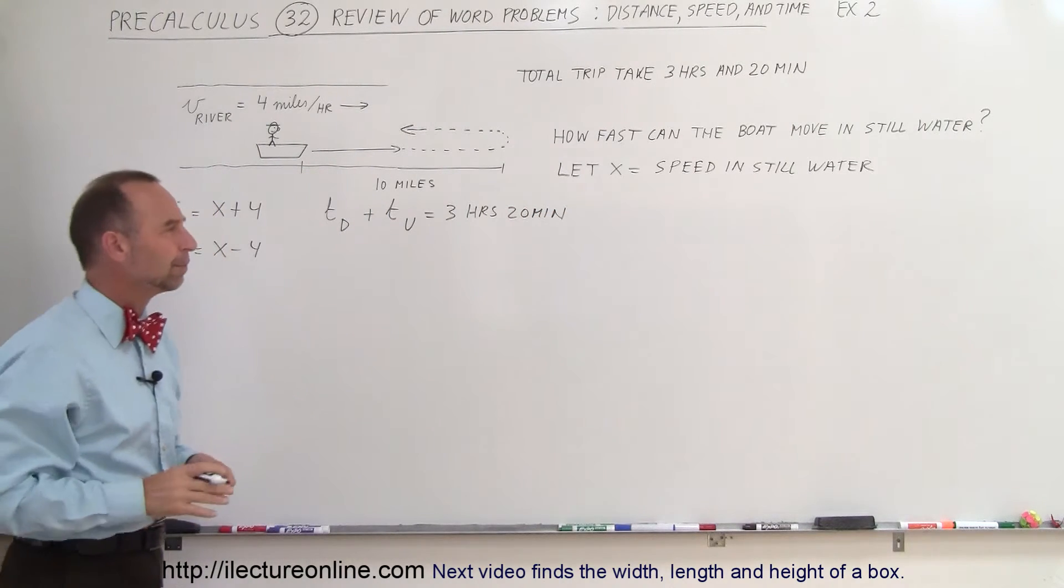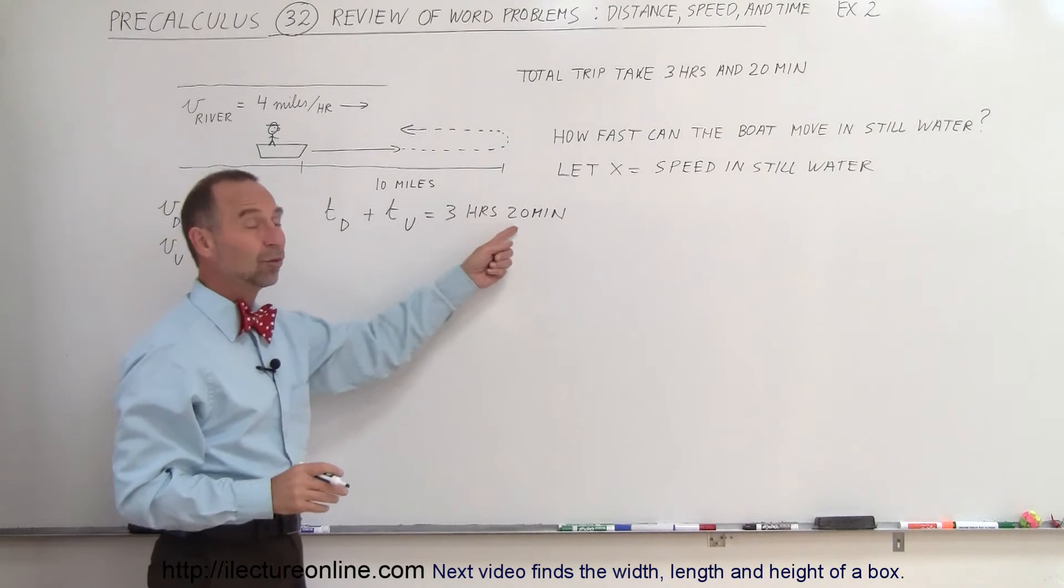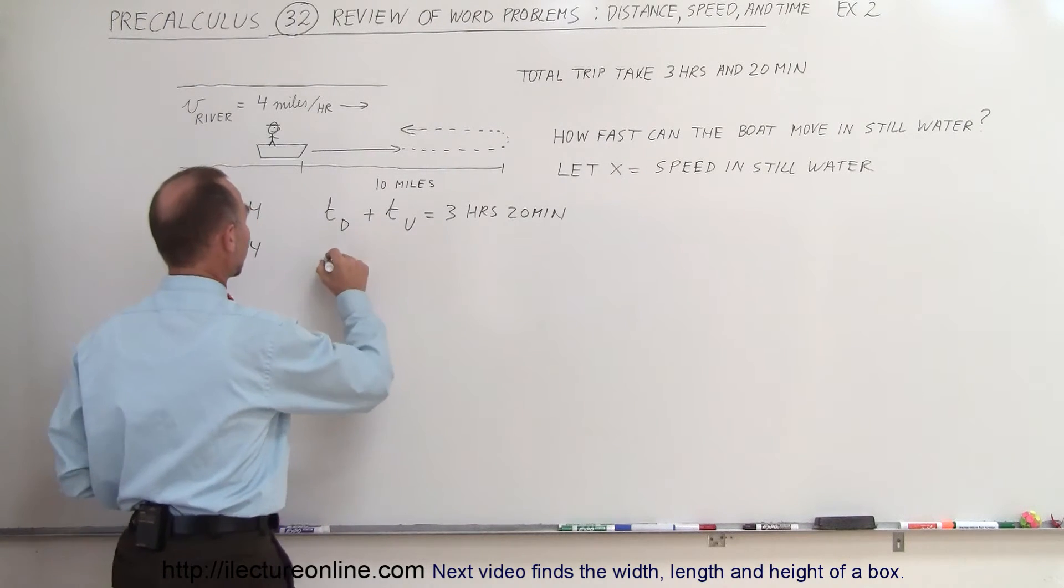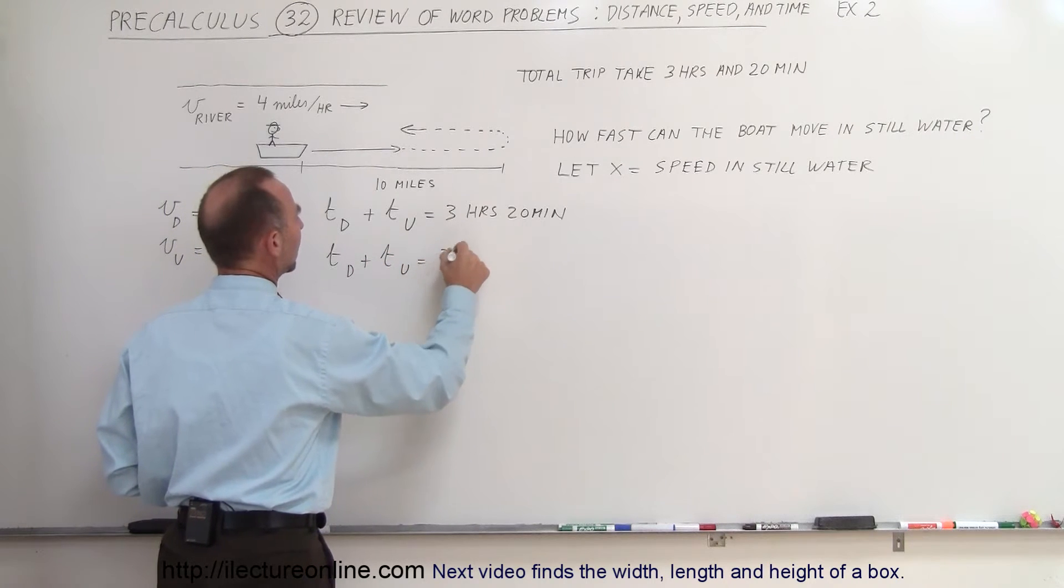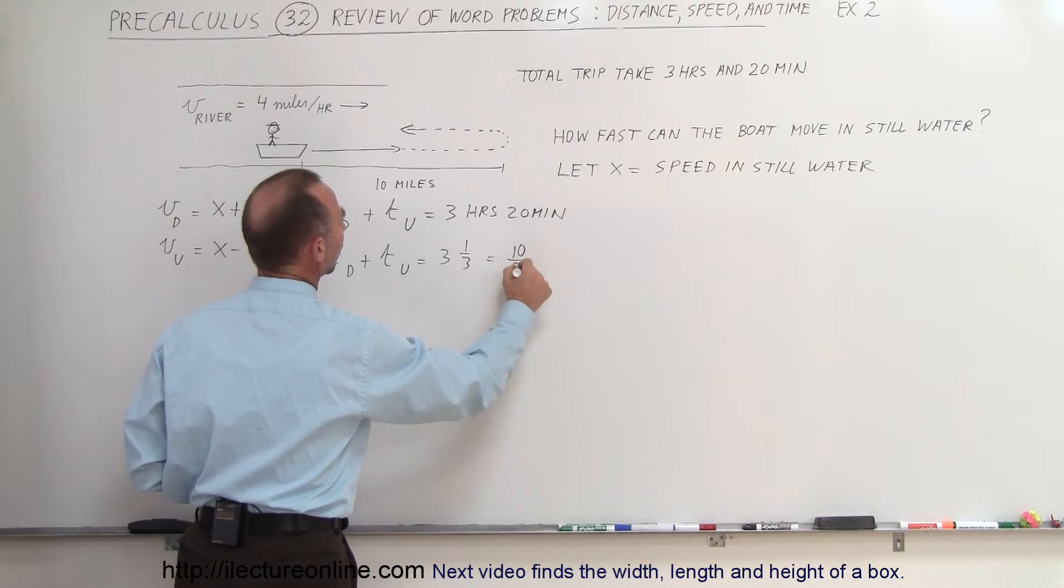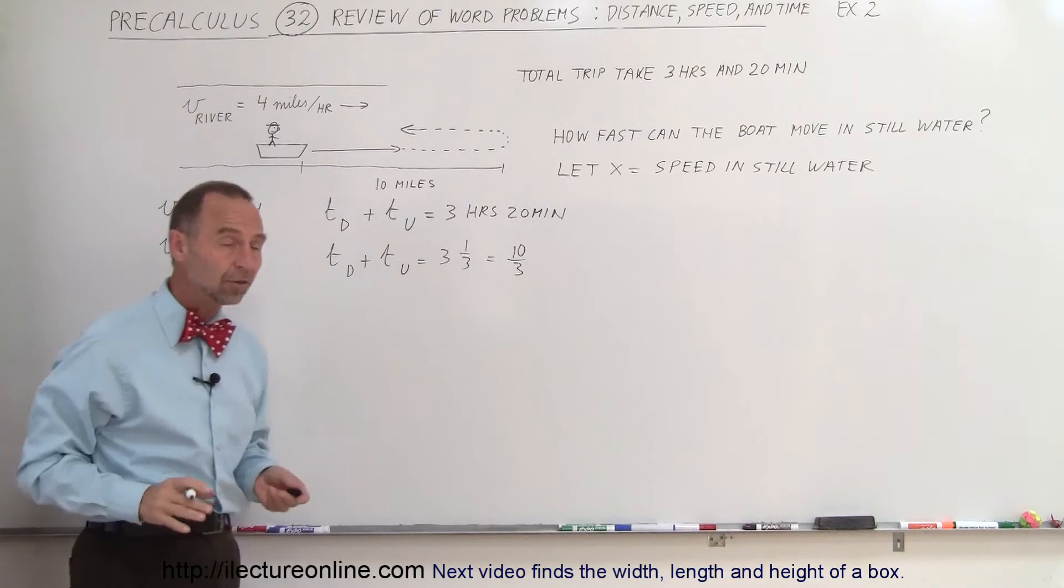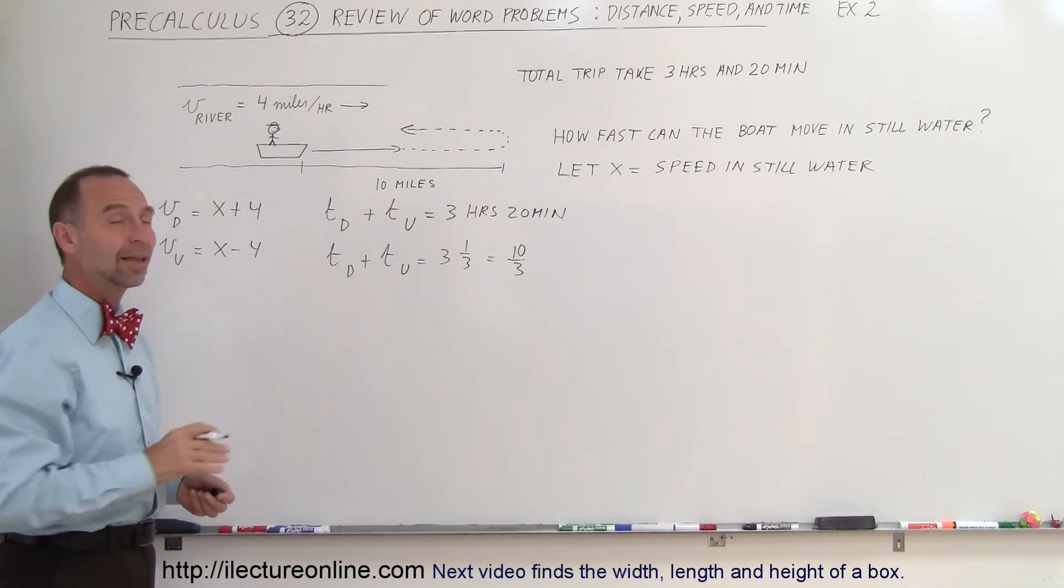Of course, we want to convert that to a decimal or at least a fraction. We know that 20 minutes is one-third of an hour, so we can say that the time downstream plus the time upstream is equal to 3 and a third hours, which is equal to ten-thirds hours.